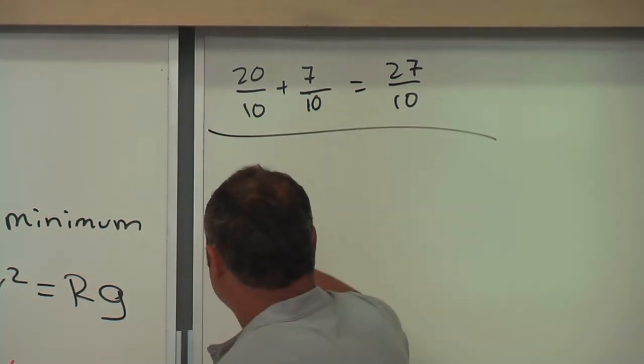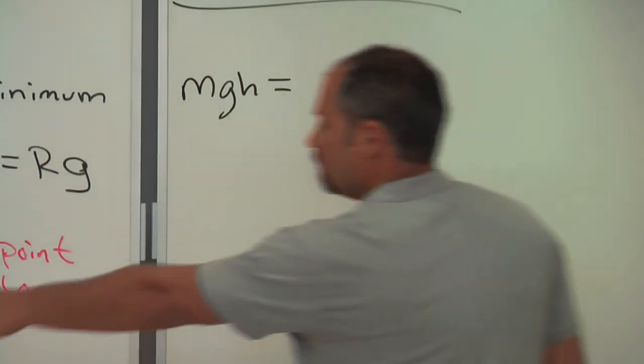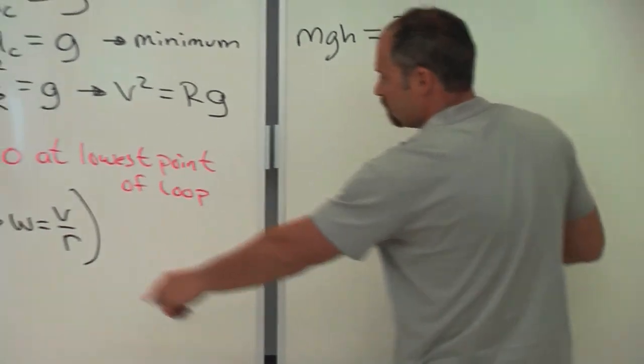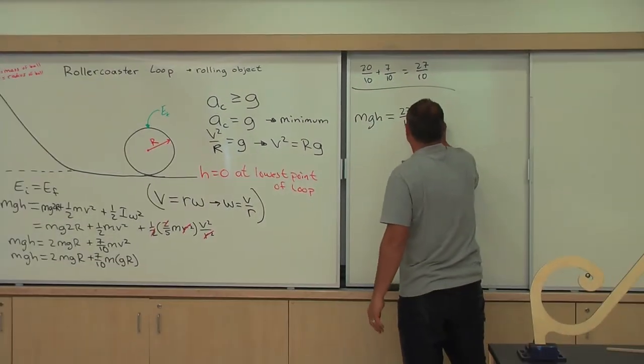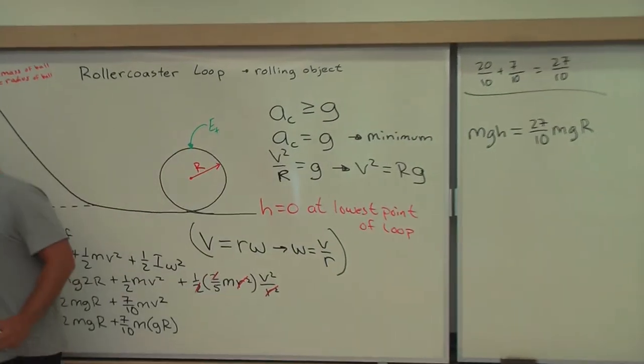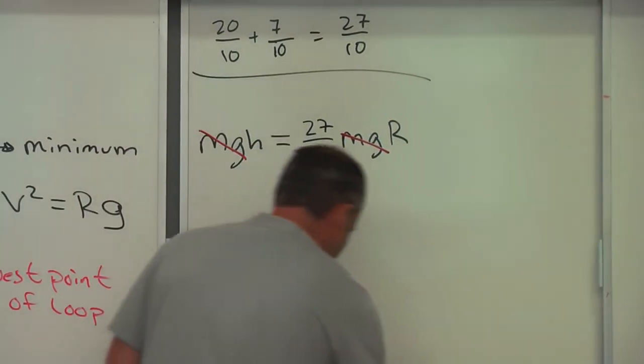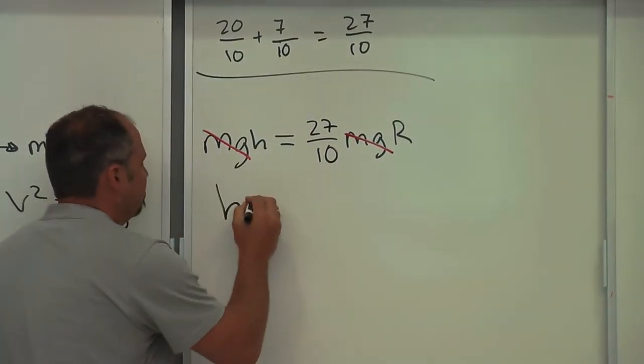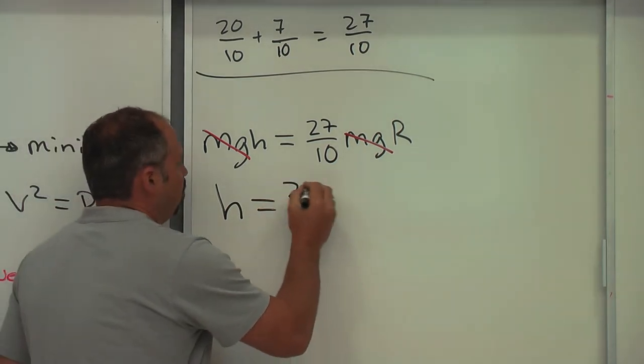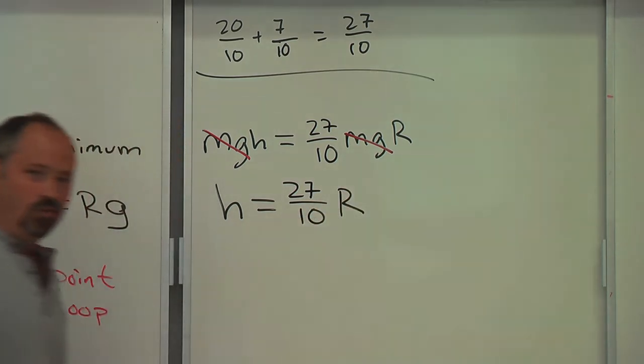Now we have mgh equals 27/10 mgR, and we see that the mgs cancel on both sides, and we've finished the problem. The height that the ball must start at is equal to 27/10 times the radius of the loop.